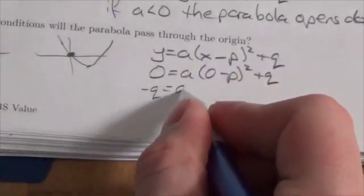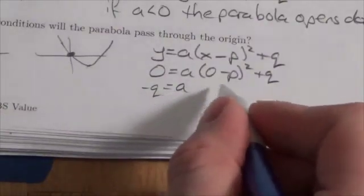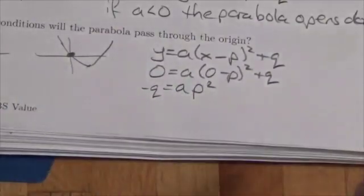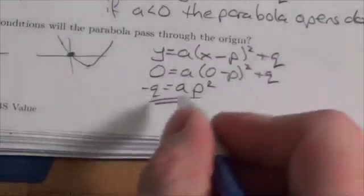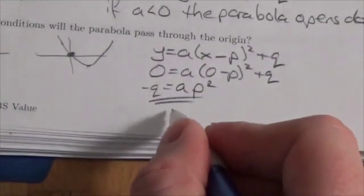So negative Q equals AP squared, because 0 minus P is negative P, squared is just P squared. And so if this is true, then it passes through the origin.